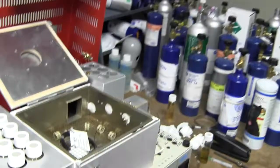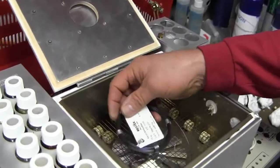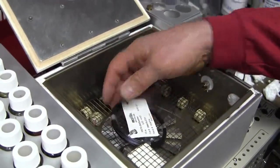Hi, my name is Hugh and I'm going to show you how to remove and replace the column in the SRI 8610 Cannabis Testing GC. The column is in the column oven of the GC.